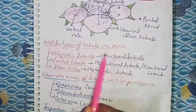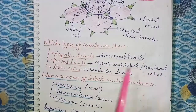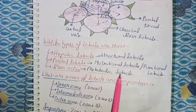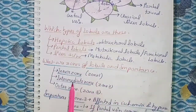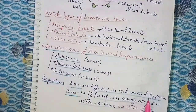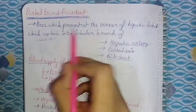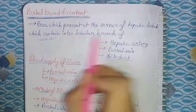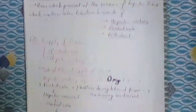Types of lobules: hepatic lobules are structural lobules, portal lobules are nutritional or functional lobules, and liver acinus (hepatic acinus) is the metabolic lobule. Zones of the lobule: inner zone is Zone 1, intermediate zone is Zone 2, and outer zone is Zone 3. Zone 3 is affected in cases of ischemia and hypoxia. Zone 1 is affected when the portal vein carries alcohol or toxic substances. The portal triad, present at the corner of the hepatic lobule, contains the interlobular branch of the hepatic artery, portal vein, and bile duct.